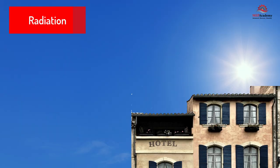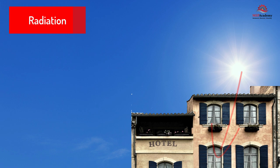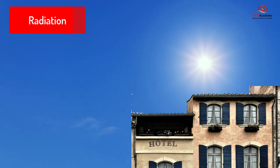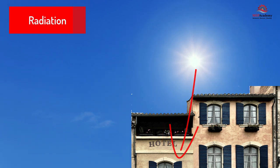Radiation. Radiation occurs when the sun's rays travel through space and strike an object. That object absorbs the heat and can pass the heat along using any of the other heat transfer processes. This is one method by which heat gain occurs in buildings as it falls upon the structure and through windows.